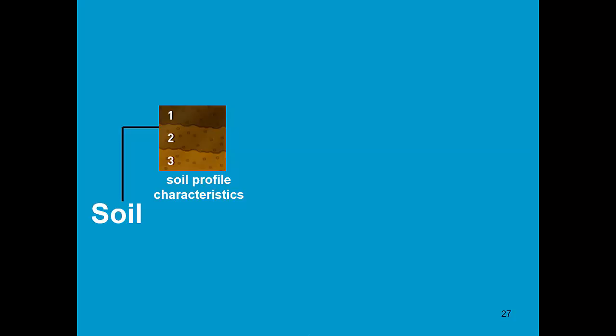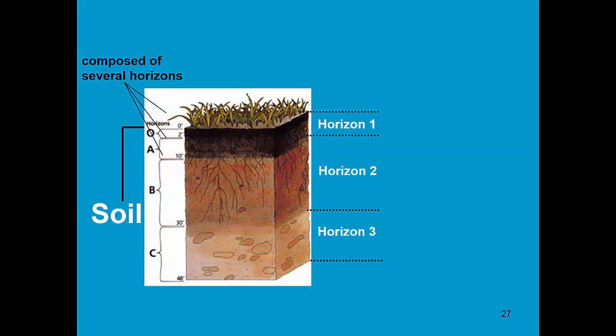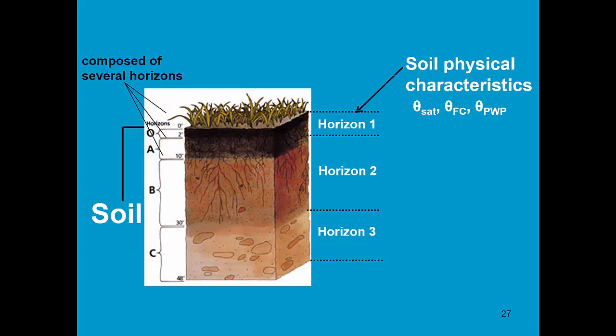However, we can distinguish different soil horizons, up to five. For each of those soil horizons, we need to specify the soil water content at saturation, field capacity, and permanent wilting point.